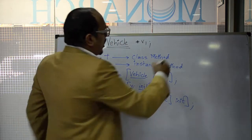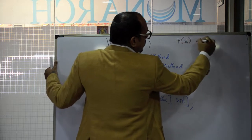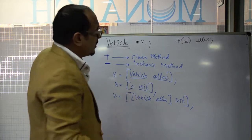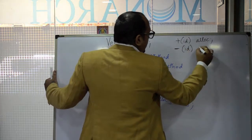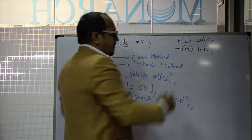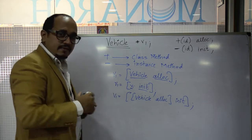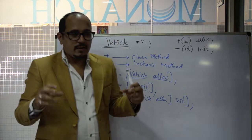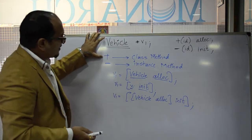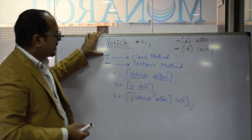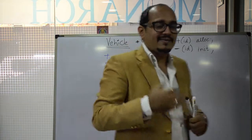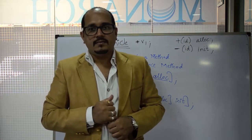The declaration looks like: plus id alloc — alloc returns an object of any type, represented as id, meaning a type object. Initialization is declared as minus id init. Plus sign for alloc because it's a class method, minus sign for init because it's an instance method. With this, we understand Objective-C syntax — why square brackets are used, why there are no commas (because the label belongs to the argument), and the significance of plus and minus signs: plus indicates the class is the receiver (like a static method), minus indicates an instance method.